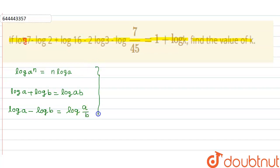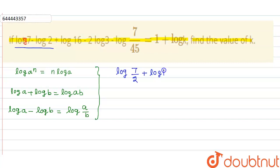We apply the third property: log 7 minus log 2 equals log(7/2). Then plus log 16. The term 2 log 3 can be written as log 3 squared, which is log 9. And minus log(7/45).